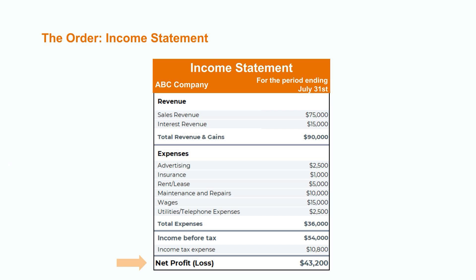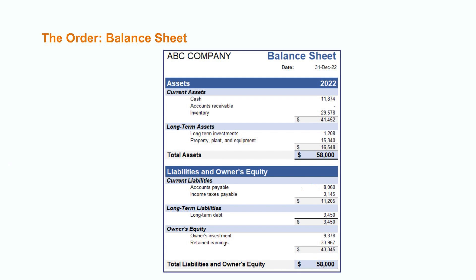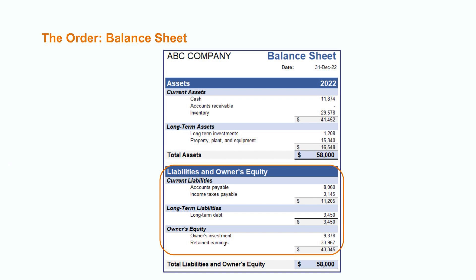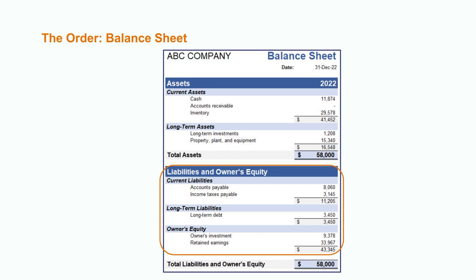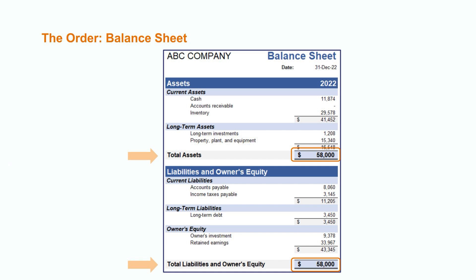This profit can either be paid out to shareholders or reinvested in the company. The portion that is reinvested will be added to the company's retained earnings balance. Once that's complete, this allows us to move forward with preparing the balance sheet. Individual accounts are grouped by account type, with assets listed on the top half and liabilities and owner's equity on the bottom half of the statement. We can see all of the company's assets grouped together — things like the value of their cash, inventory, and property, plant and equipment. The company also lists out all their liabilities and owner's equity, reporting financial commitments like money owed to suppliers and debt, as well as shareholder investment and cumulative retained earnings. Total assets must always equal total liabilities plus owner's equity.